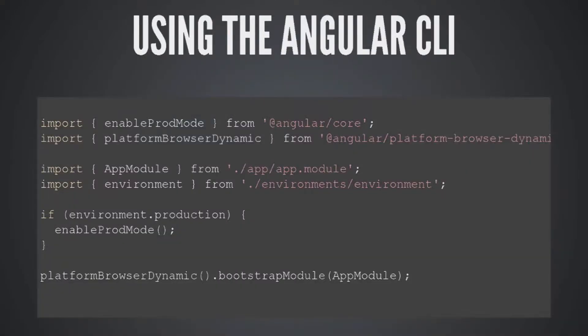Another benefit of using the Angular CLI is that you know what environment you're running in, so you can enable prod mode if you're in production. By default, Angular runs a second change detection cycle after each main one — this checks to see if anything changed after it should have and notifies you if a bug is detected. By enabling prod mode, you disable the second run, so it speeds things up a little bit.